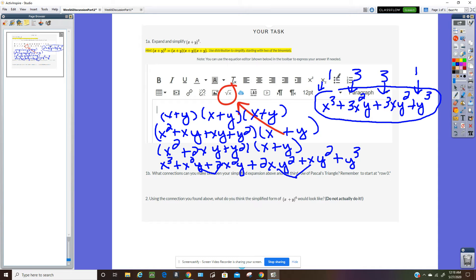It's row 4, but it's starting with row 0, it's row 3. The coefficients are 1, 3, 3, 1.